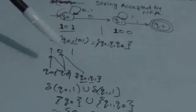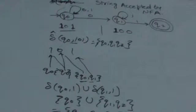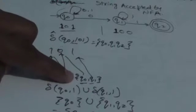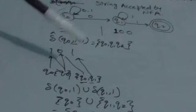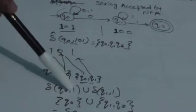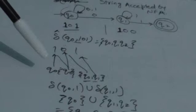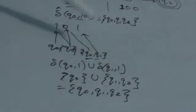Now we have a set of two states and it will read input symbol 1, which is the third symbol. As I told you in the previous tutorial, to calculate the transition for a set of states, apply the input symbol to each state individually and take the union. Apply 1 to Q0 — output is Q0. Apply 1 to Q1 — output is the set {Q1, Q2}.